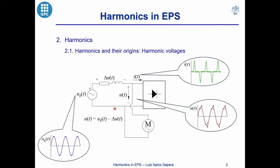We have the same circuit as the previous one, but including the impedance of the grid, where we have the voltage drop. In this situation, the voltage at the load terminals is equal to the sinusoidal supply voltage minus the voltage drop at the grid impedance. This voltage drop is the impedance times the distorted current consumed by the nonlinear load, plus the sinusoidal current consumed by the linear load. As this current is distorted, the voltage drop is also distorted, and the voltage at the load terminals results distorted with harmonics.